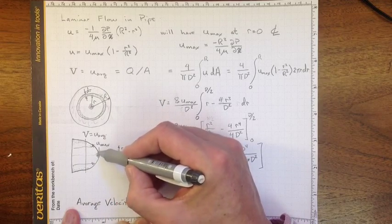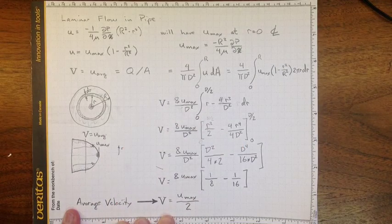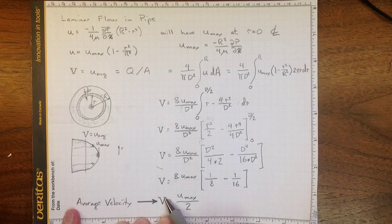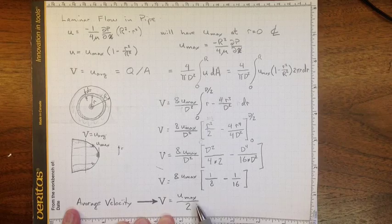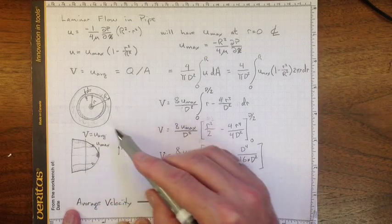is traveling at that relatively low velocity here, compared to the high velocity in the center. So the average velocity is one half the maximum velocity, and we can use that when we're trying to work out what's going on in the pipe.